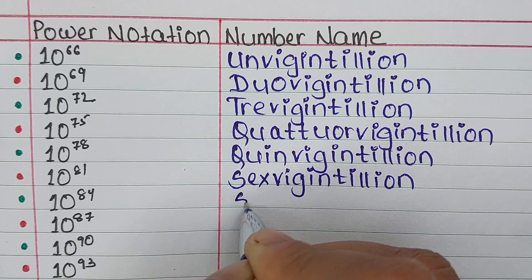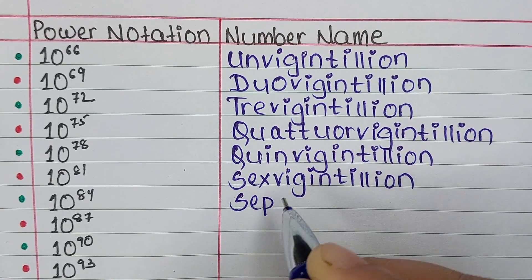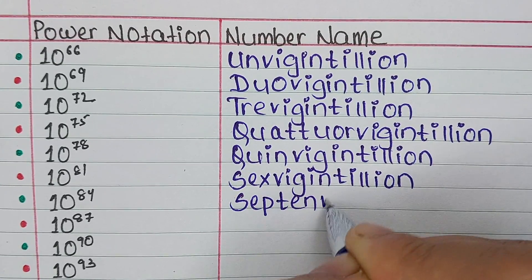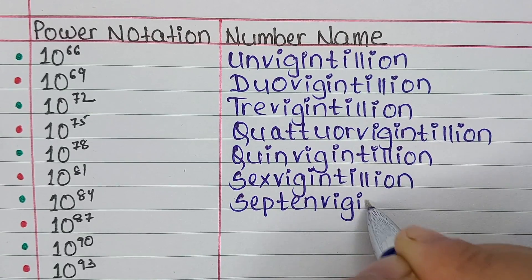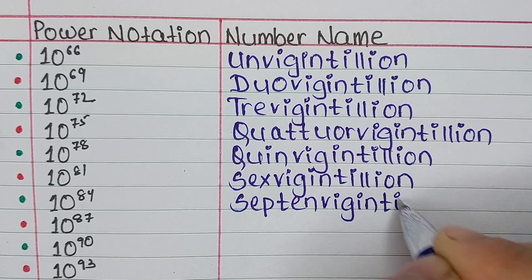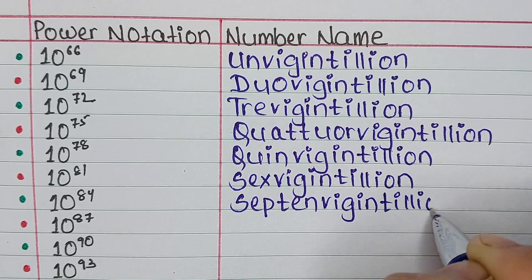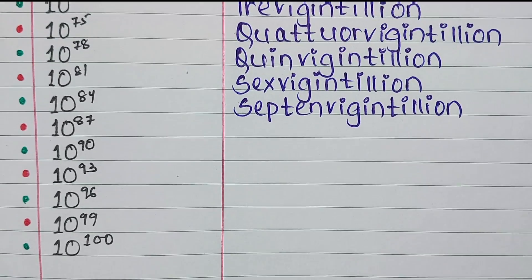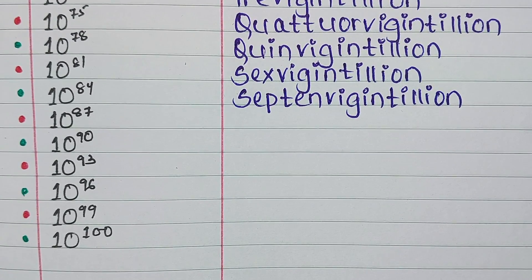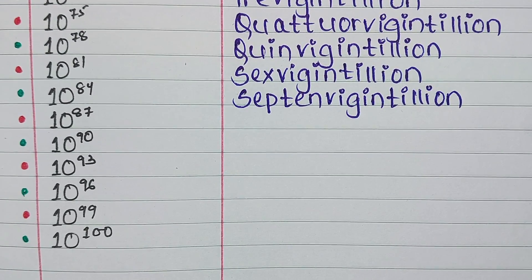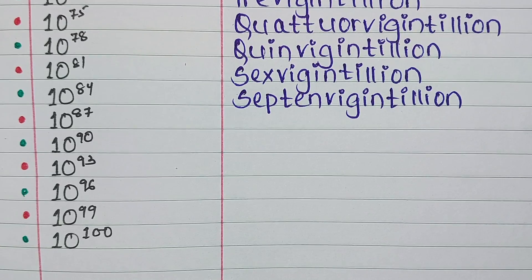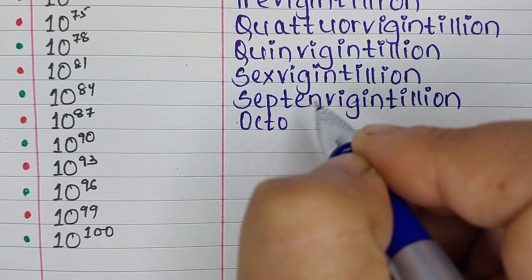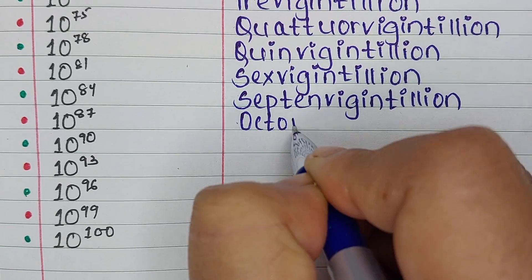Next is 10 to the power 84. And the name is Septemvigintillion. Next is 10 to the power 87. And the name for this number is Octovigintillion.